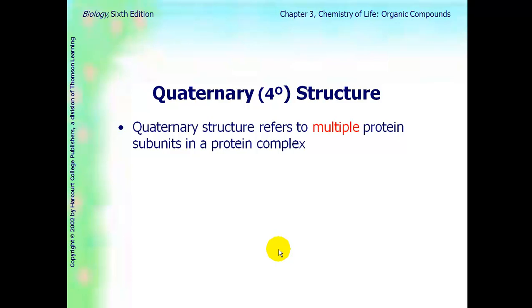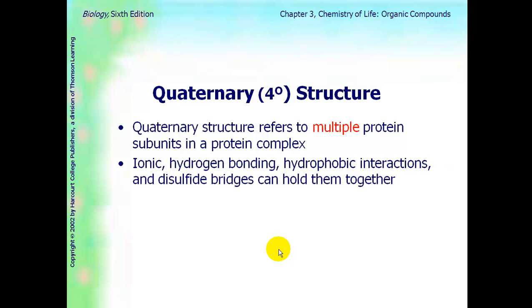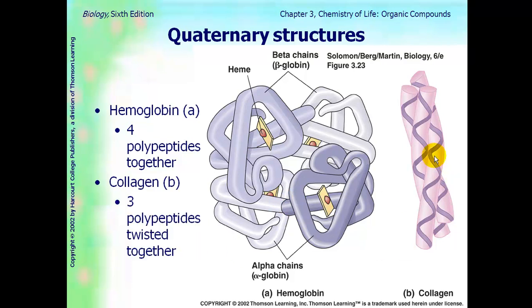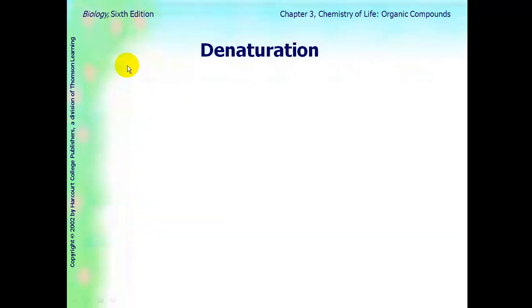Quaternary structure refers to multiple proteins interacting together by the same type of interactions for tertiary. Each polypeptide on its own can have a primary, secondary, and tertiary structure. Here is an example of quaternary structure like in hemoglobin and in collagen. In hemoglobin, you have four different proteins here, and they're all interacting. And in collagen, there are three polypeptides all twisted together. So this is quaternary, when you have more than one protein basically interacting there.